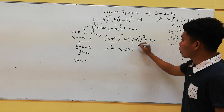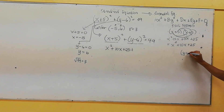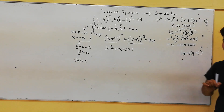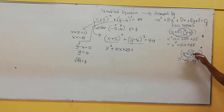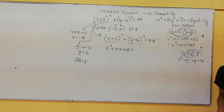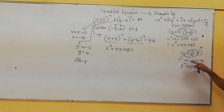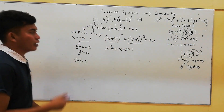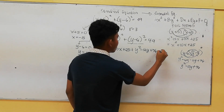Next, expand y minus 6 squared: y minus 6 times y minus 6. Using FOIL: y squared minus 6y minus 6y plus 36 — remember, negative 6 times negative 6 is positive 36. So we have y squared minus 12y plus 36, and this equals 49.